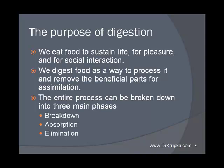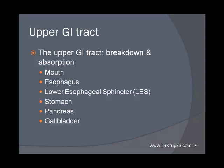First, the purpose of digestion. We eat food to sustain life, for pleasure, for social interaction. We digest our food as a way to process it and remove the beneficial parts for assimilation into our body. The entire process, in my view, can be broken down into three main phases: the breakdown of the food, the absorption of the nutrients, and the elimination of the waste. Pretty simple. We're going to talk about what does what as far as your gastrointestinal tract is concerned.